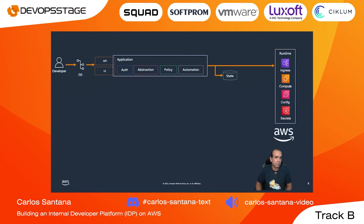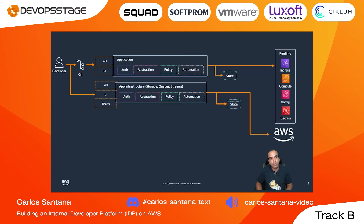At a high level, the developer pushes code or configuration to Git, uses an API or app to enter the system, state is saved, and code is pushed to production on AWS. But that's not the whole picture for most enterprise customers. There's also the abstraction for infrastructure: if your app needs a database, storage, queues, or streams, you go through the same process — opening a ticket for another team to deploy that infrastructure. State is saved, and then your infrastructure for the app is deployed, working together to serve customers.